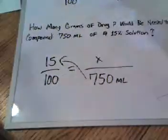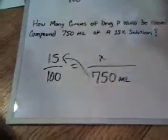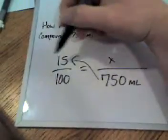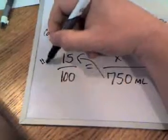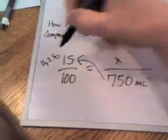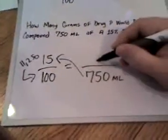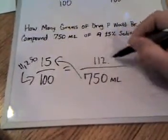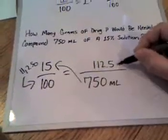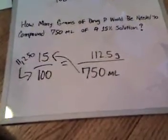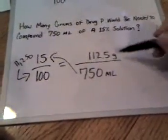Let's do that. First step: 750 multiplied by 15 is 11,250, and then if we divide that by 100 we get 112.5, which would be grams.